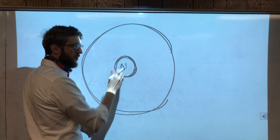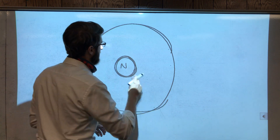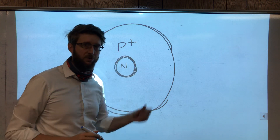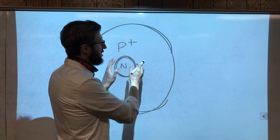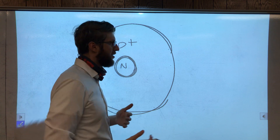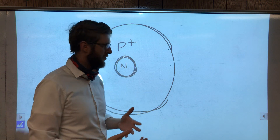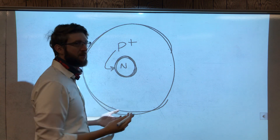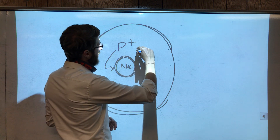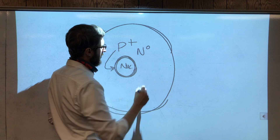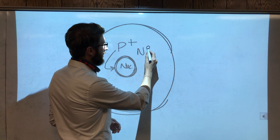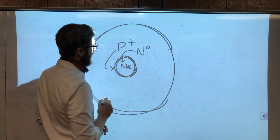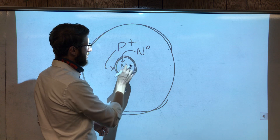Now the nucleus is actually made up of two different smaller parts. These are protons — I'm putting P-plus, because P stands for proton and plus means it's positive. These things that make up the atom have electrical charges, just like electricity. So the proton is positive. The other thing in the nucleus is a neutron — N-zero — where N stands for neutron and zero is the charge it has. It's not positive, not negative — it's zero. So the nucleus is made up of protons and neutrons together.